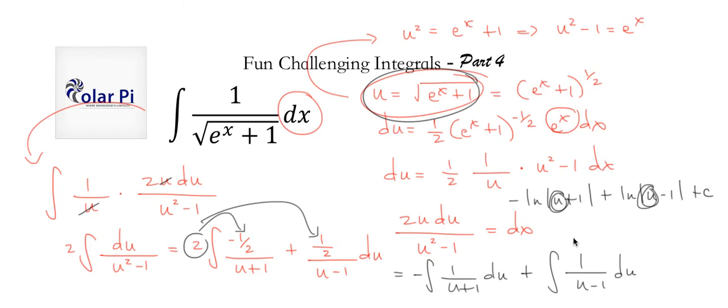And, by the way, the absolute values are unnecessary because the quantities you have inside the absolute values of ln in this problem are both positive. Okay, just a side note. Take care.